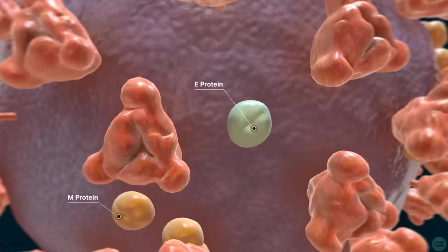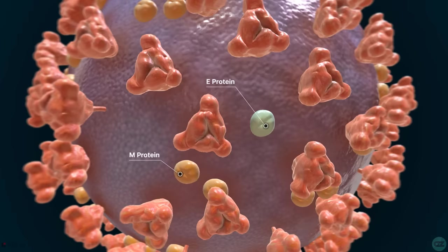So essentially, the M and E proteins play a critical role in turning the host cell apparatus into workshops where the virus and our own cells work together to make new viral particles.